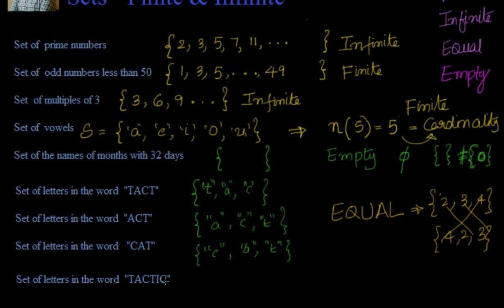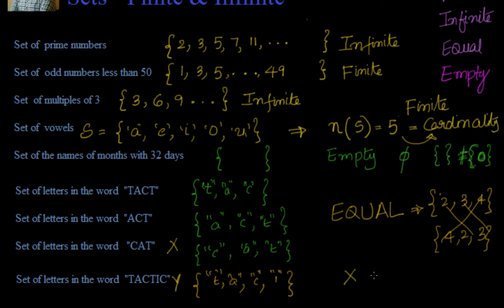Now look at the set of letters in the word 'tactic'. The distinct elements are T, A, C, I — that gives 4 elements, whereas the previous sets had only 3. So if this set is Y and the others are X and P, we say X is not equal to Y because they have different numbers of elements. But P equals X because they have the same elements.